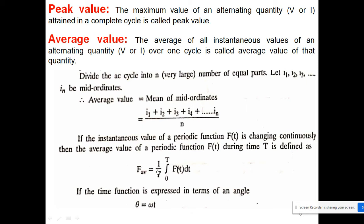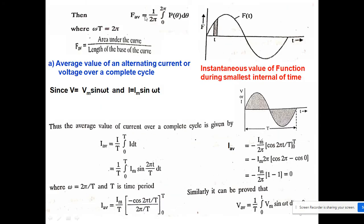For a continuously changing periodic function, the average value is defined as (1/T) times the integral from 0 to T of the function. Since the time function can be expressed in terms of angle theta equal to omega t, the average value formula becomes an integral over one complete cycle from 0 to 2 pi. This means the average equals the area under the curve divided by the base length.